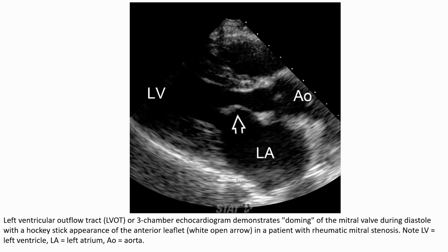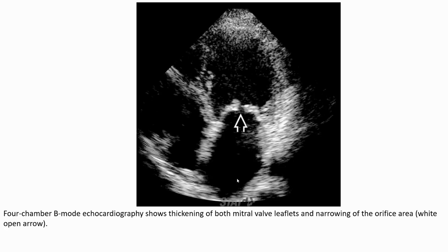This echo image demonstrates doming of the mitral valve during diastole with a hockey stick appearance of the anterior leaflet, in a patient with rheumatic mitral valve stenosis. This other echo image shows thickening of both mitral valve leaflets and narrowing of the orifice area.